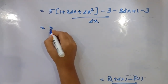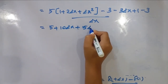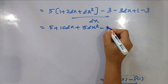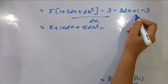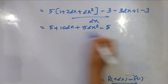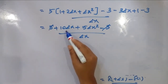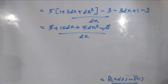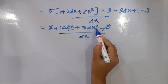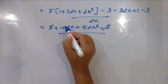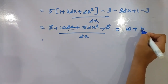Expanding: 5(1 + Δx)² − 3(1 + Δx) + 1 − 3 divided by Δx gives 5 + 10Δx + 5Δx² − 3 − 3Δx + 1 − 3 divided by Δx. After cancellation of Δx, this simplifies to 10 + 5Δx − 3, giving 10 − 3 = 7 as Δx approaches zero.